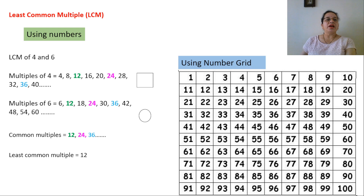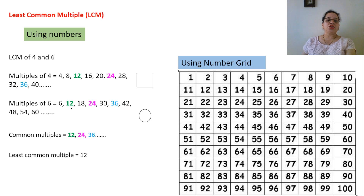Now let us start with least common multiple. Again the first method is using numbers. The multiples of 4 are 4, 8, 12, 16, 20, 24 and so on. The multiples of 6 are 6, 12, 18, 24, 30, 36 and so on. The common multiples are 12, 24, 36. Out of these three, the smallest number is 12. So the least common multiple will be 12.